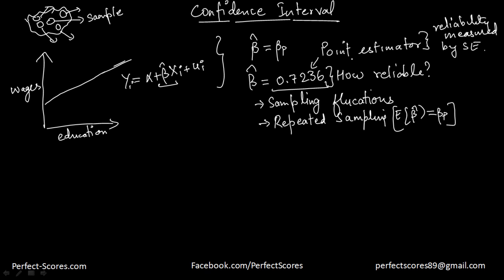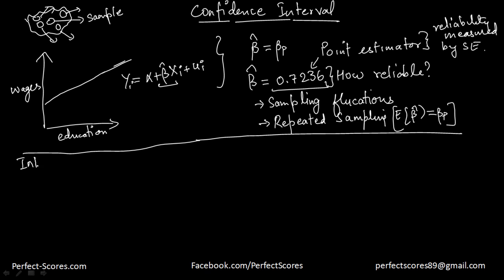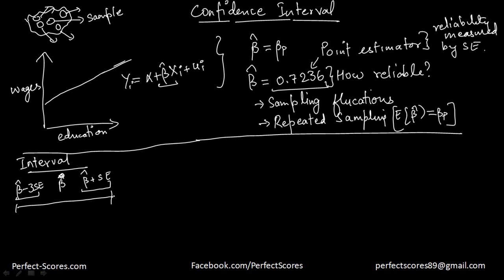We can construct a kind of interval. We have the value of standard error, so we say the population beta hat is, let's say, three times standard errors less and three times standard errors more, and the actual value of beta is going to be in between these two values. What we're doing here is constructing an interval — this is known as interval estimation. Instead of relying on the point estimate, we rely on interval estimation.